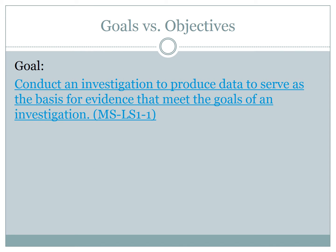For example, here is an actual goal from the Next Generation Science Standards. This is a middle school goal: students will be able to conduct an investigation to produce data to serve as the basis for evidence that meets the goals of an investigation. This is all about getting students in science to be able to conduct investigations using data. Notice that's a very long-term goal — it doesn't happen overnight and generally doesn't happen with only one lesson.